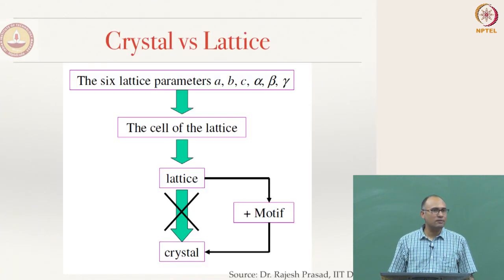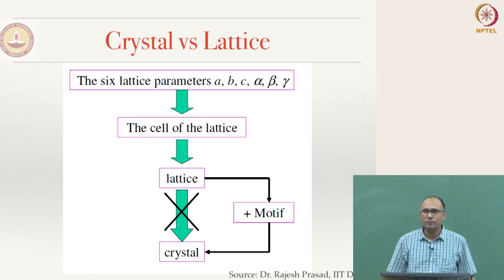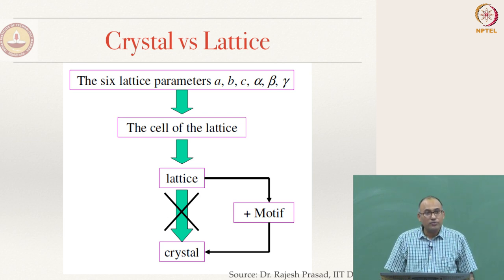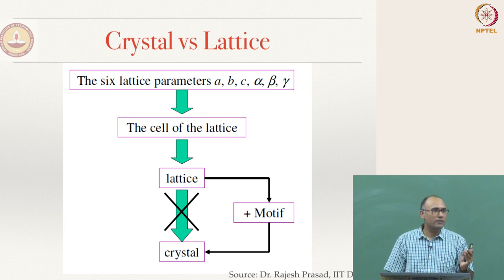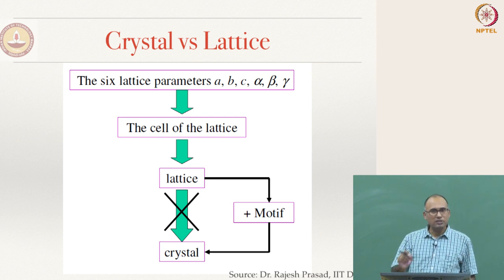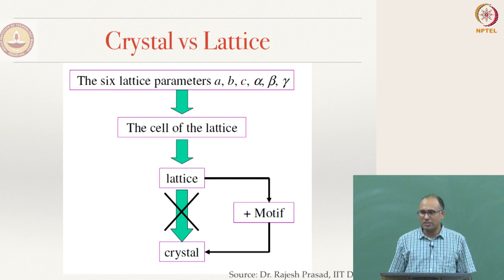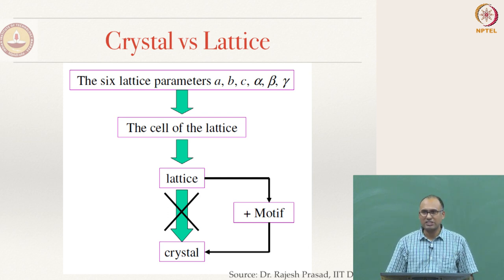In 2D, three lattice parameters are required to define a unit cell: A, B, and alpha. In 3D, you have three edges and three angles: A, B, C, alpha, beta, gamma — six lattice parameters — and from these you get the unit cell of the lattice.